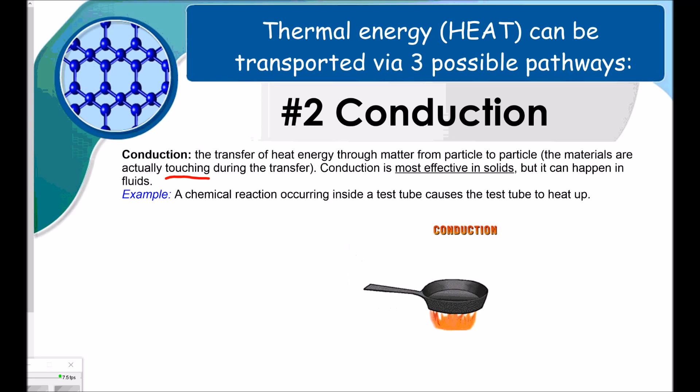So for example, a chemical reaction occurring inside of a test tube causes the test tube to heat up. And it makes the glass hot, so you shouldn't touch it. Another good example is the animation I have here. A person is touching a really hot skillet that's being heated. So conduction is happening between the person's hand and the hot skillet.